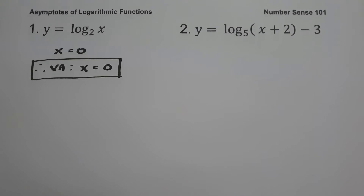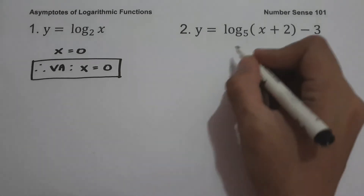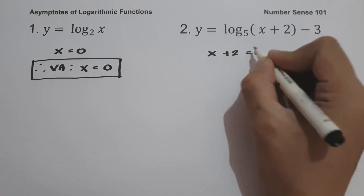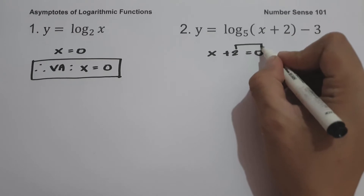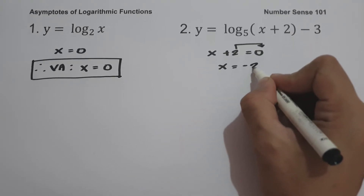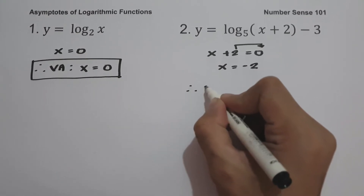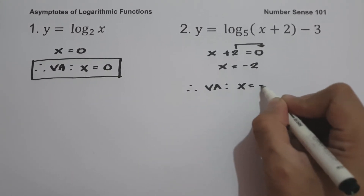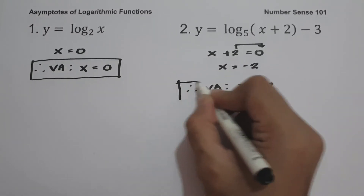On example number two: y equals log base 5 of (x plus 2), minus 3. To solve for the vertical asymptote, let us equate the argument equal to zero. So we have x plus 2 equal to zero. Moving 2 to the other side gives us x equals negative 2. Therefore, our vertical asymptote is x equals negative 2, and this will be our answer.